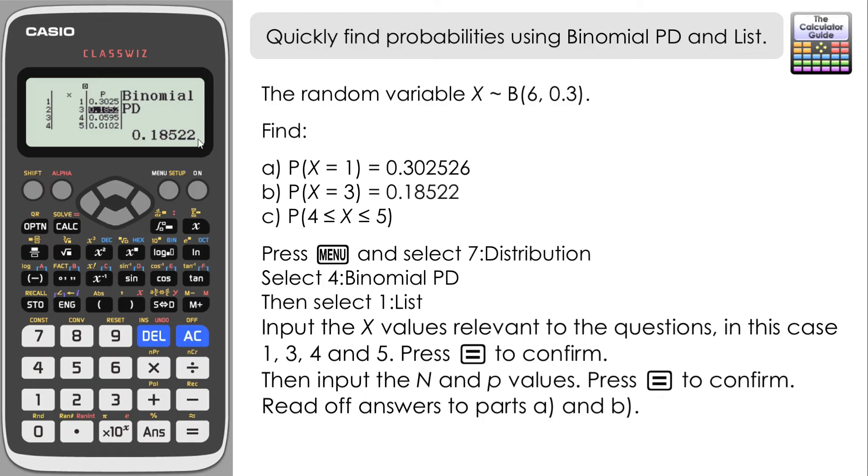And if we navigate down, we've got directly to the answer to part B here as well. So the probability of x equaling 3 is 0.18522.